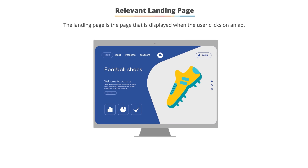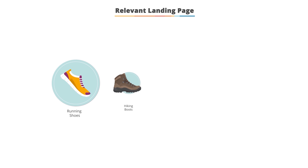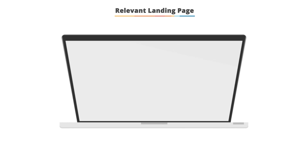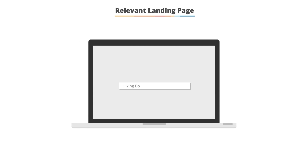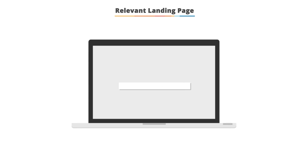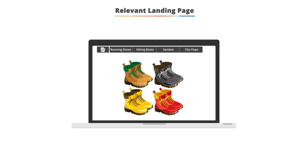A landing page is industry jargon for the page a user goes to after clicking on the ad. It does not have to be your homepage — it should be a page relevant to your ad and the keyword. For example, if you sell shoes and have running shoes, hiking boots, sandals, and flip-flops, if someone searches for hiking boots, they don't want to see your homepage or your running shoes page. They want to see a page full of hiking boots.